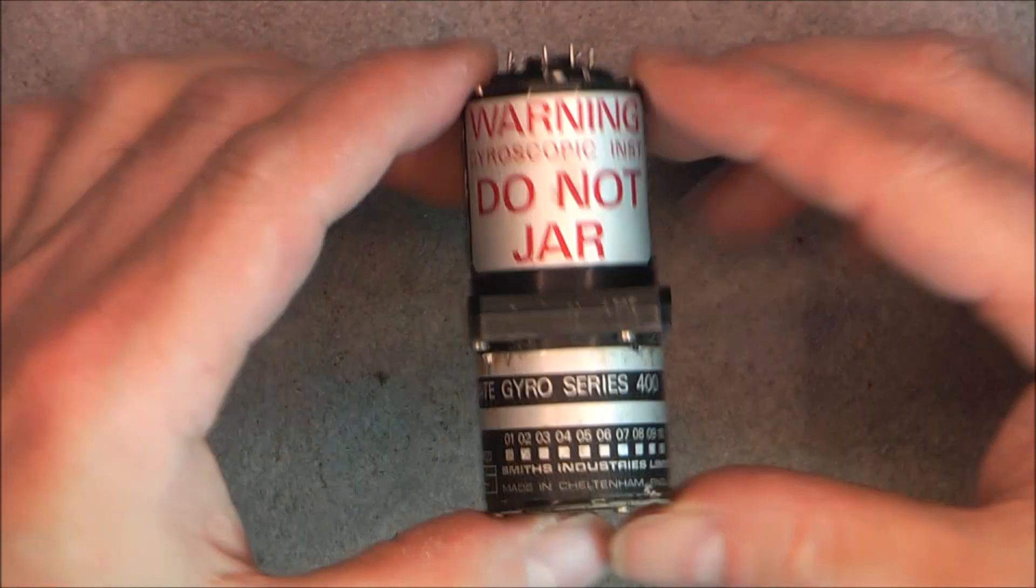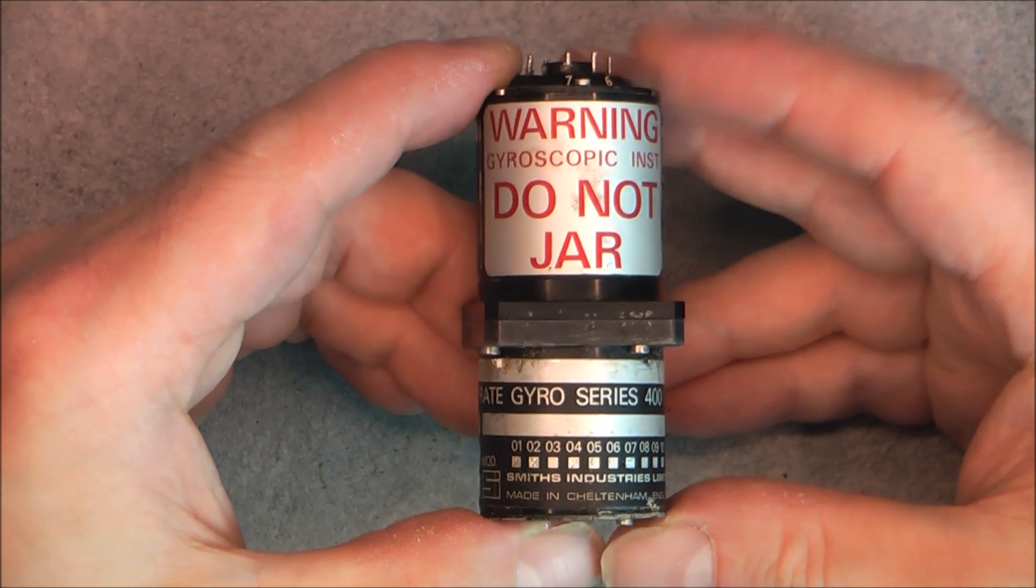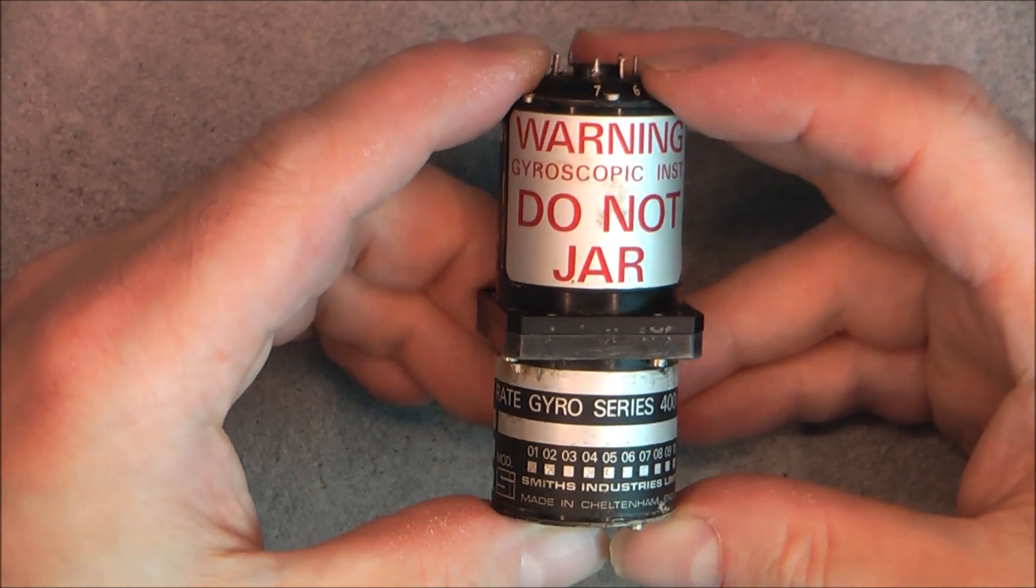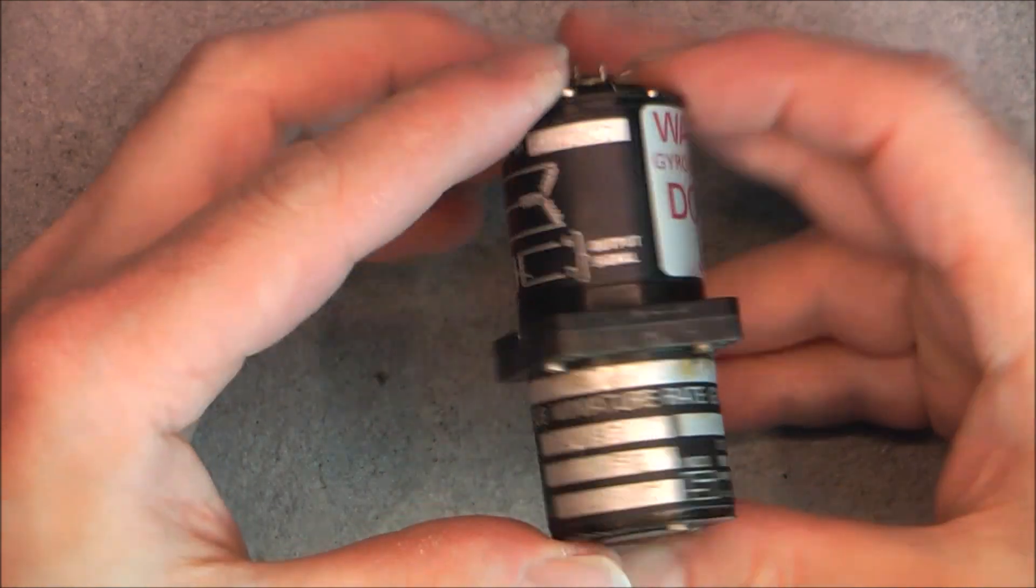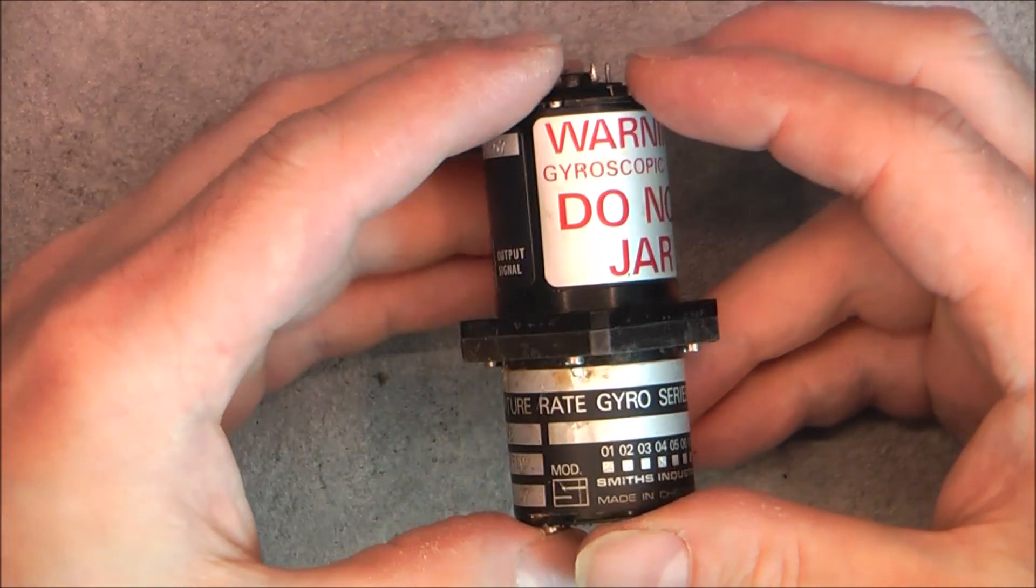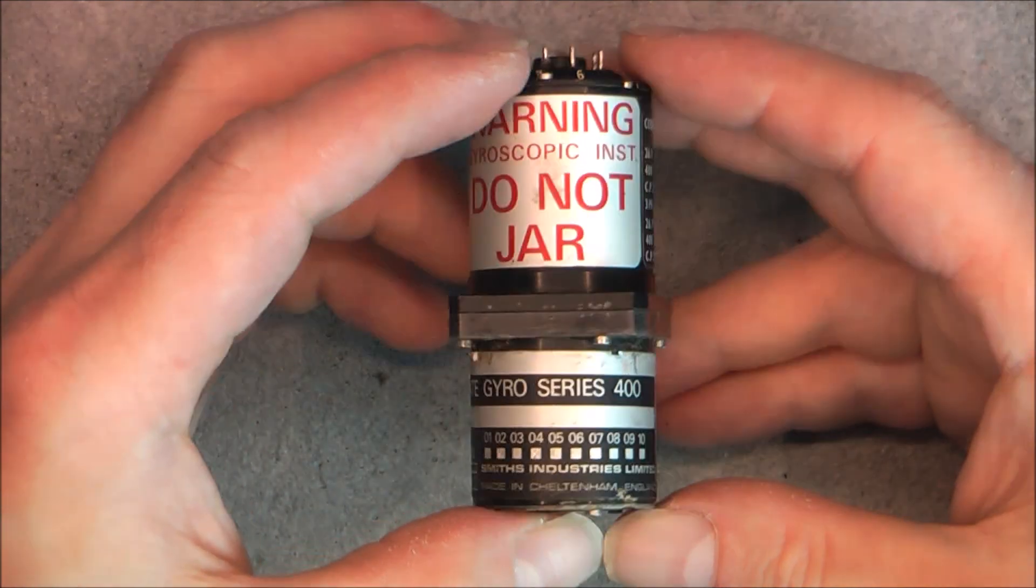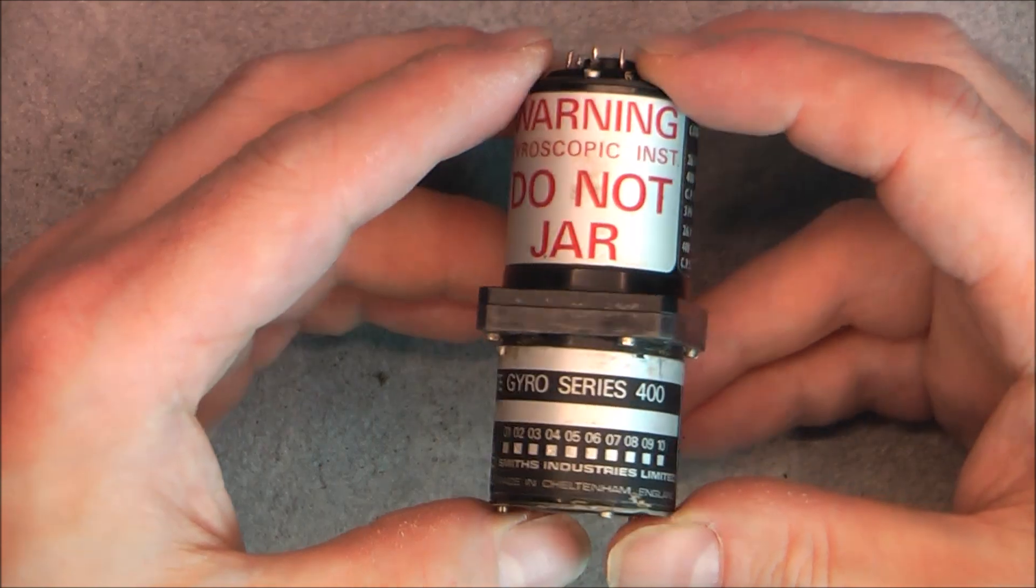Hi, for today's teardown, we have this from the Ferranti Radar Antenna, the sub-miniature gyro series 400 from Smiths Industries.